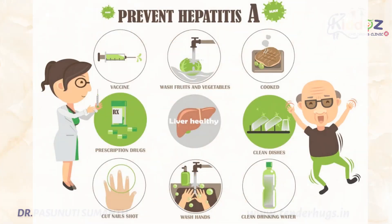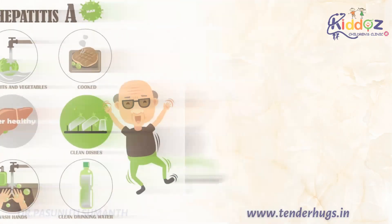Now we'll see how to prevent this hepatitis A infection. Maintaining good hygiene and sanitation is one of the best ways to prevent this disease, and also the vaccination of susceptible children and adults is the most effective way to prevent this disease.